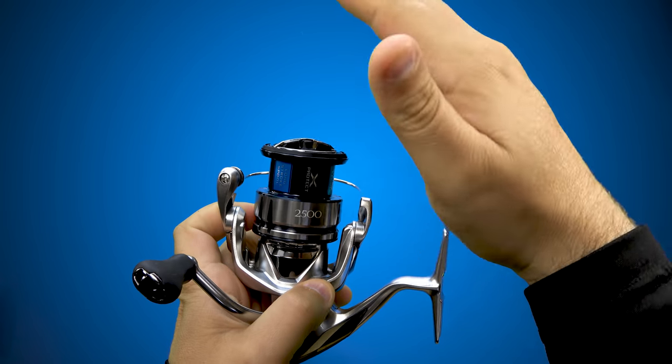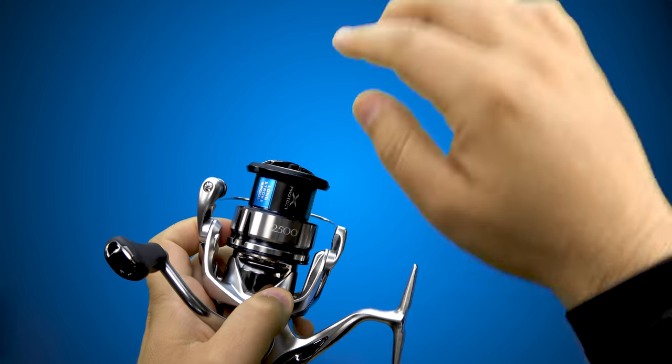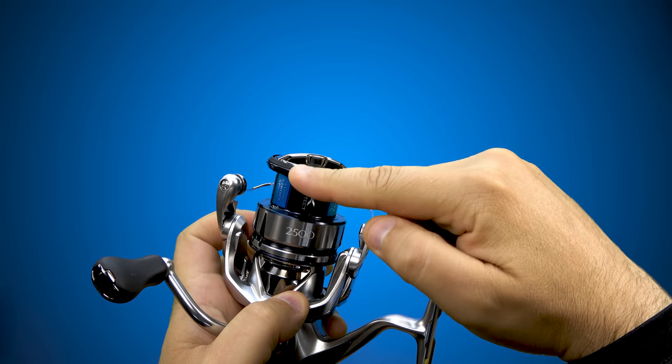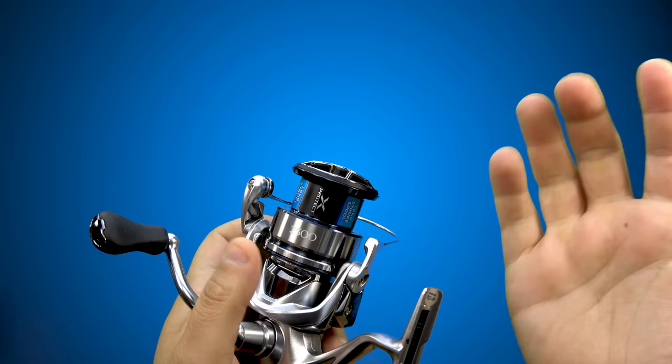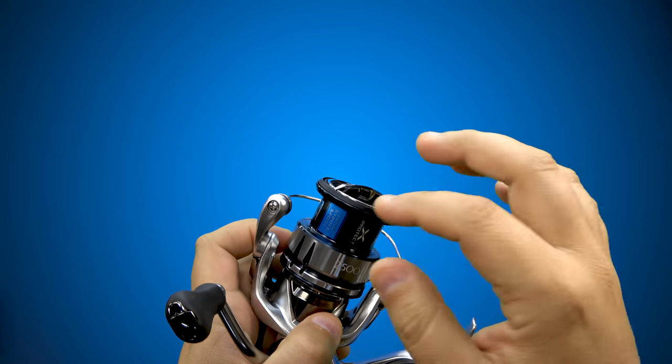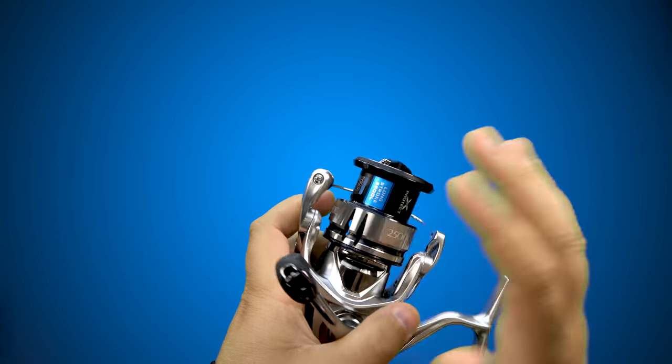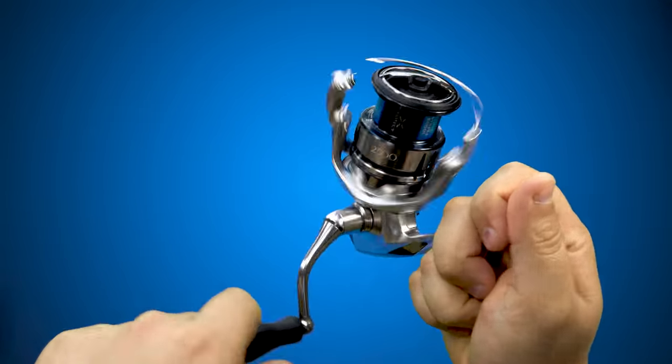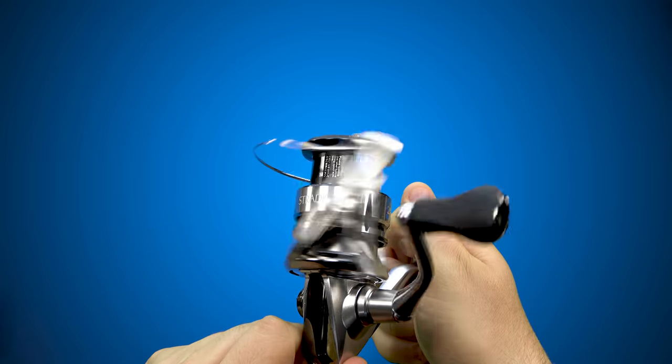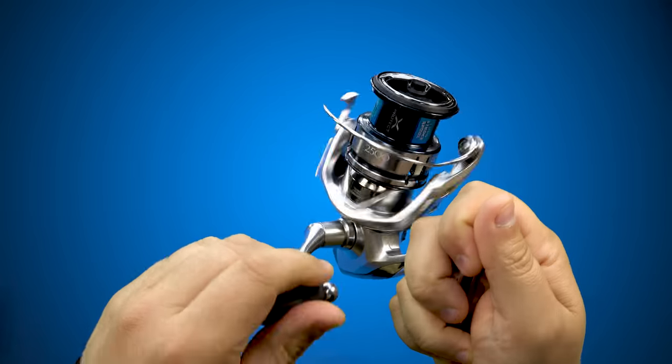And what that allows for is when you make a cast, as the line is being peeled off the spool, it changes direction as it comes off the spool fewer times per inch of line. And that allows for less turbulence going through the line guides and longer casts.